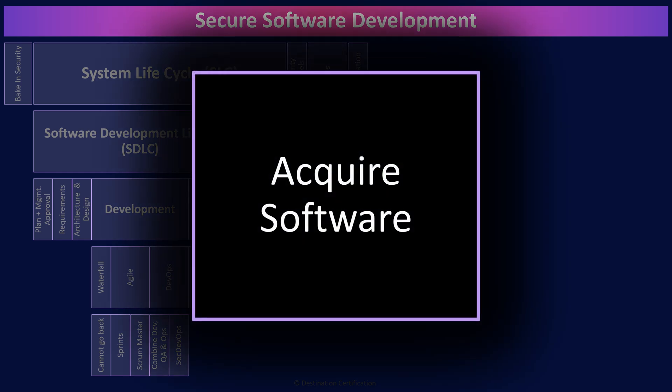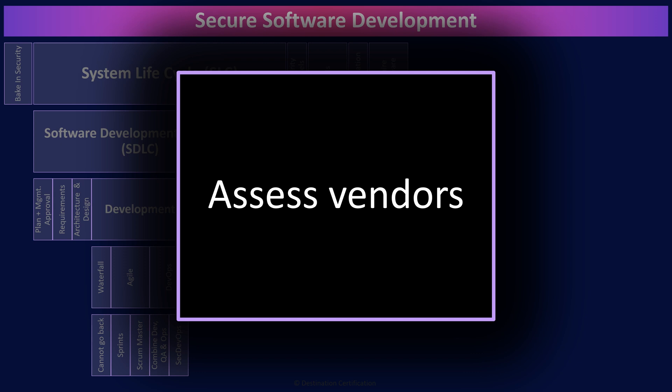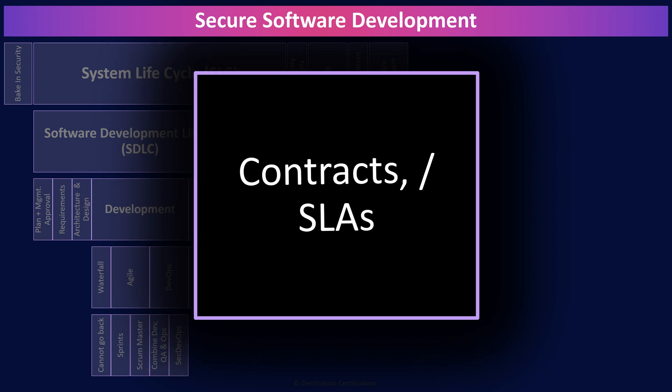If an organization is acquiring code by contracting an organization to write custom code or buying some off-the-shelf product, then the organization needs to conduct some software assurance activities to ensure the code is free from vulnerabilities and functions as intended. An important part of this process is assessing the vendor to ensure they use secure software development techniques and sufficiently test their code. Contracts and SLAs are an important tool to define the controls that a vendor must have in place and measure the effectiveness of those controls through metrics and reports.